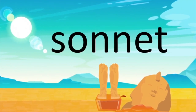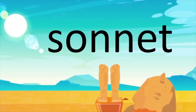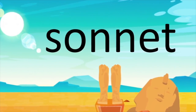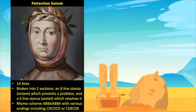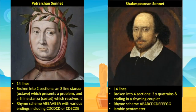A sonnet is a form of love poetry which originated in 13th century Italy, but is best known with reference to the 14th century poet Petrarch. A Petrarchan sonnet follows the convention seen here on the left. In the 16th century we have the emergence of what would become known as the Shakespearean sonnet, which follows the convention seen here on the right.